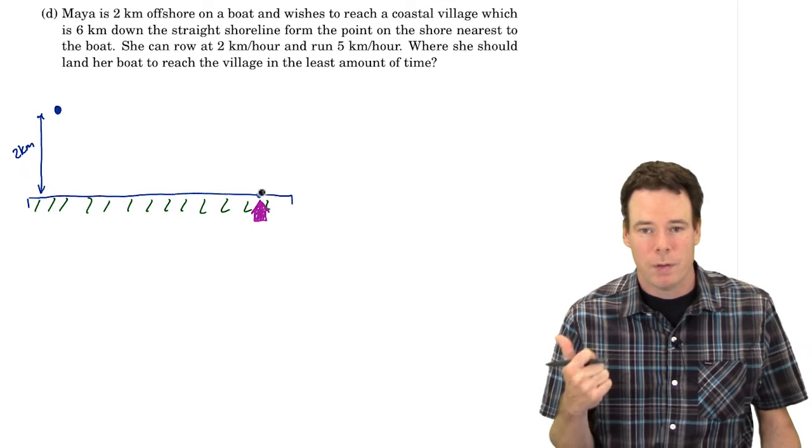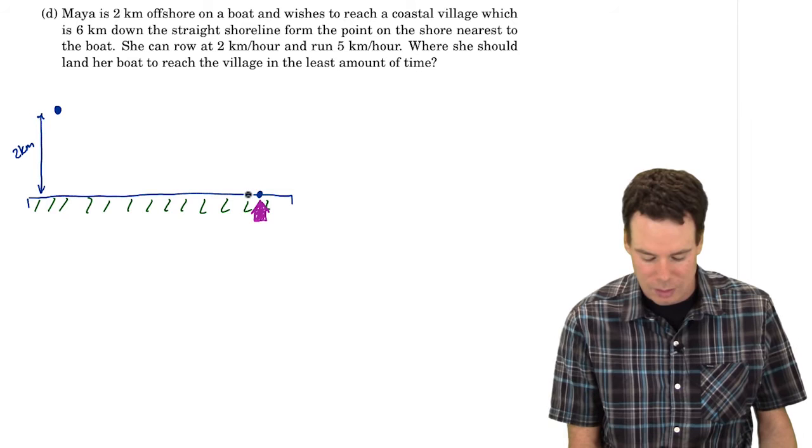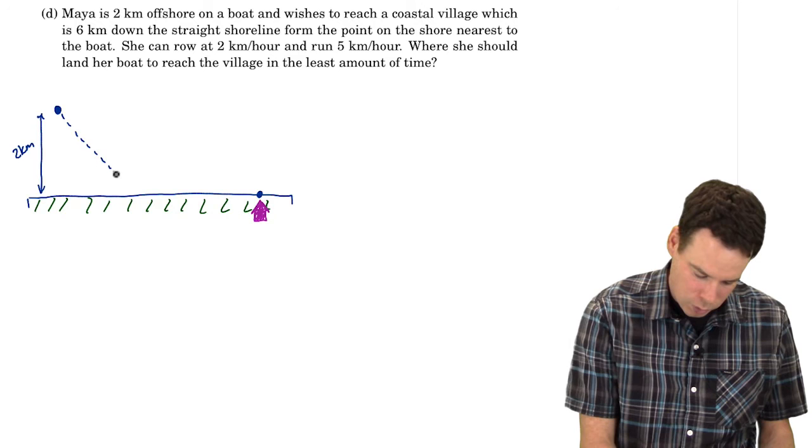We know how fast she rows, we know how fast she can run. So if she comes and beaches the boat at some point she can run the rest of the way. If she runs faster than she rows then it seems like a good idea to get to the beach to start running but you want to find this sort of balance. Where is the best spot to beach your boat in order to run the rest of the way?